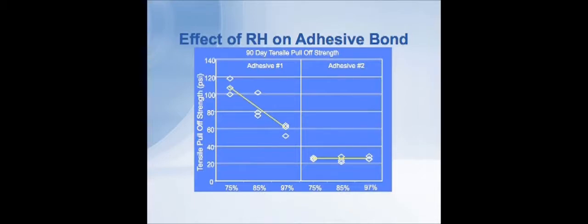Let's look at the left-hand graph first, adhesive number one. When that adhesive was exposed to 75% humidity, as shown in the last photograph of the experimental setup, we found you could get 100 to 120 psi bond strength. Some of that same adhesive was exposed then to 85% relative humidity in the concrete, and the strength went down to between 80 and 100 psi. It lost about 20% of its strength.